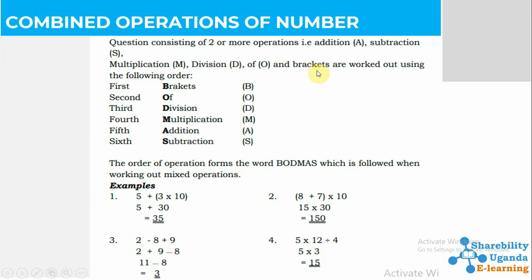These are worked out using an order. We use an order to work out the problem. If you find a number that involves multiplication, addition, or subtraction, you use an order called BODMAS. BODMAS means Bracket, then Of, then Division (D), Multiplication (M), then Addition (A), then Subtraction (S). We use this method to get the right answer.